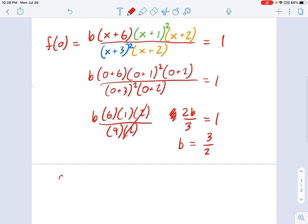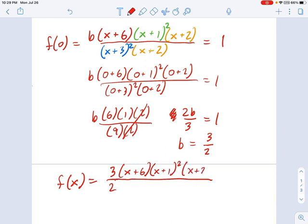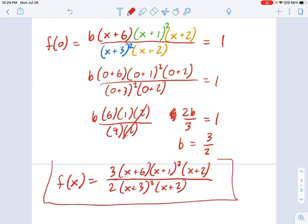So now my final equation is this, and this is what you would type in as your answer. 3 over 2, and there's a lot more to that. 3 over 2, x plus 6, x plus 1 squared, x plus 2, x plus 3 squared, and x plus 2. There we go. That is our final equation. Thank you.